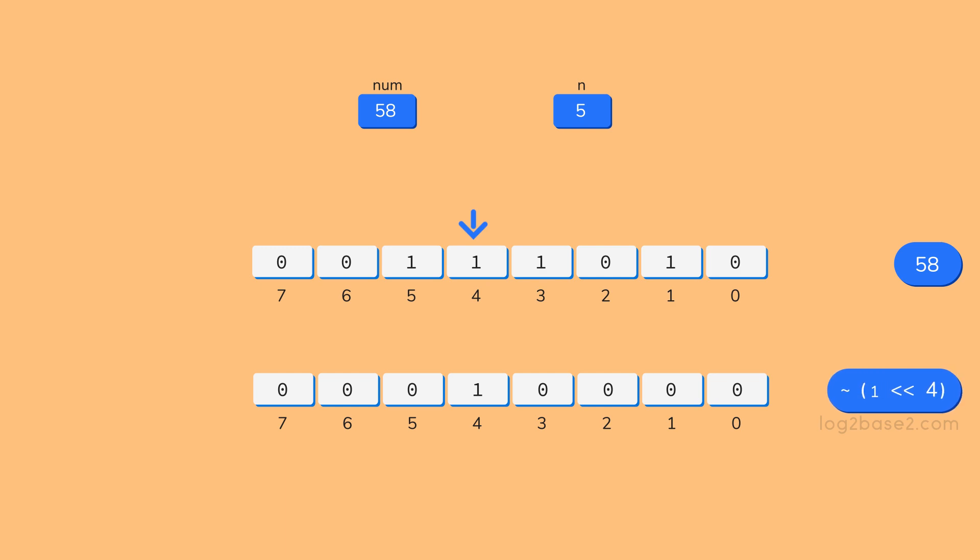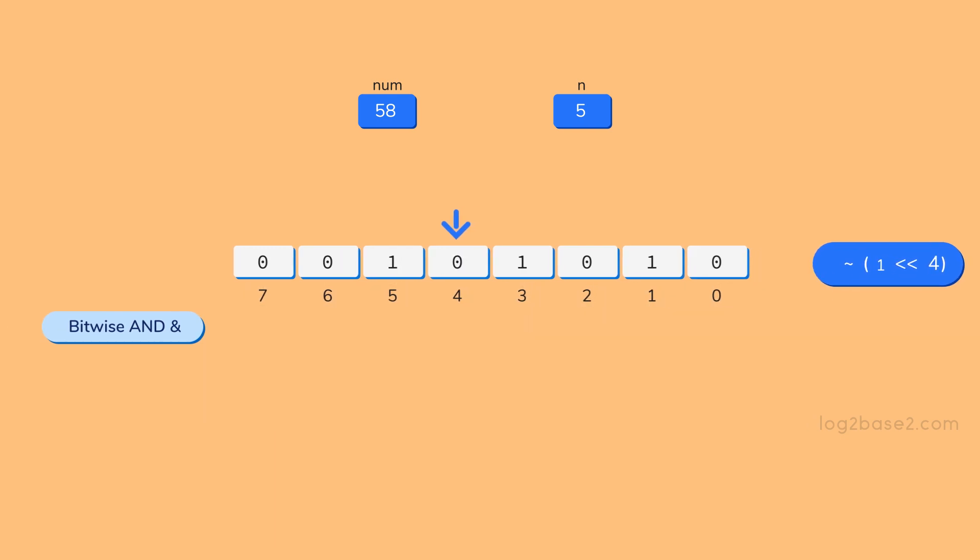So if we take the complement of this, we will get our required bit mask. That is, the nth bit alone will be set to 0 and the remaining bits will be set to 1. So let us do a bitwise AND operation between the number and our bit mask.